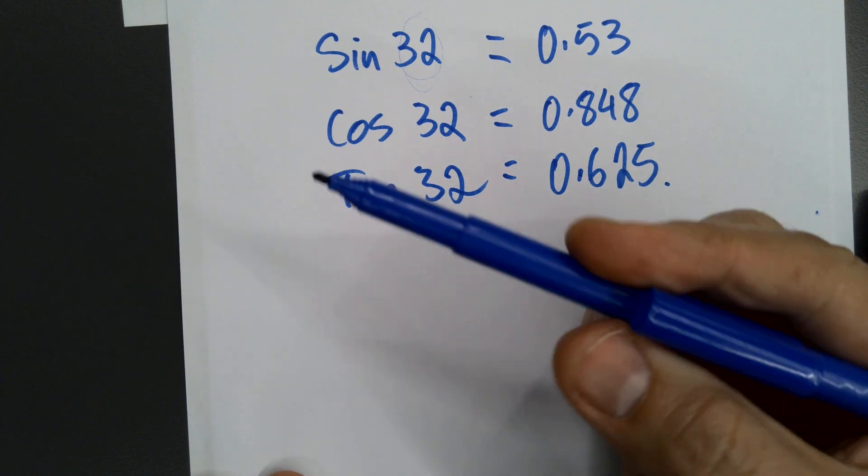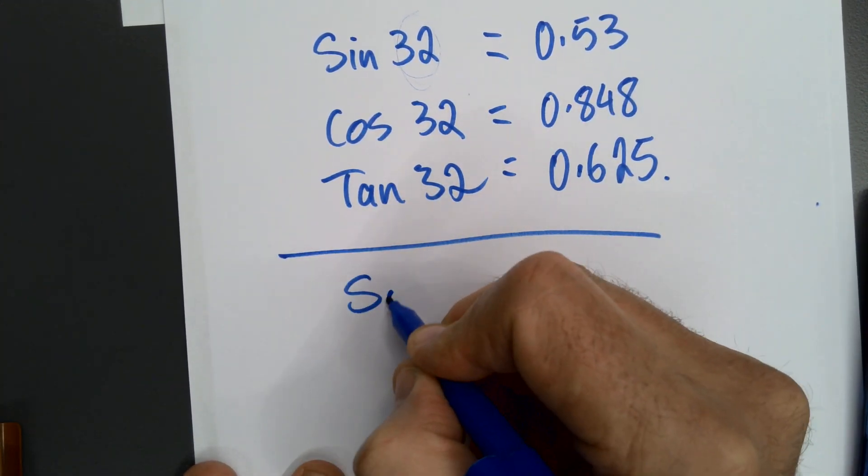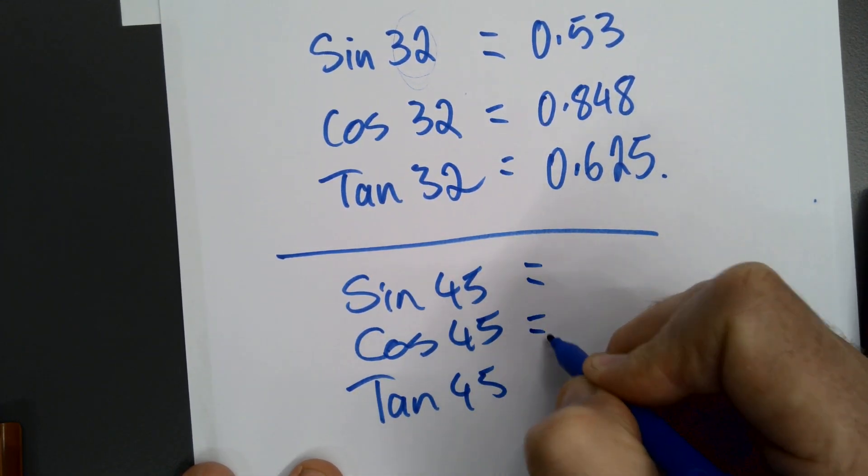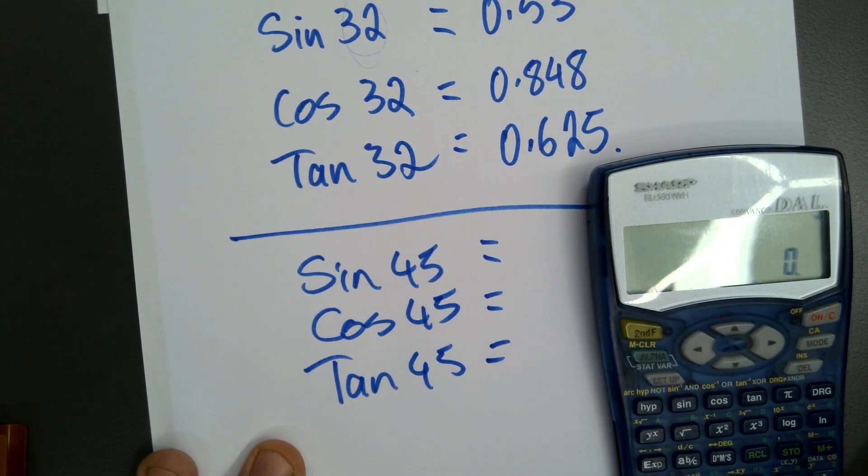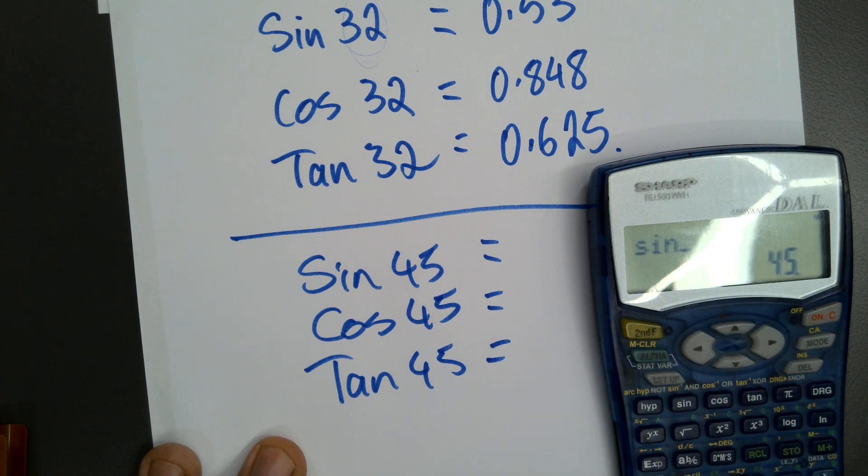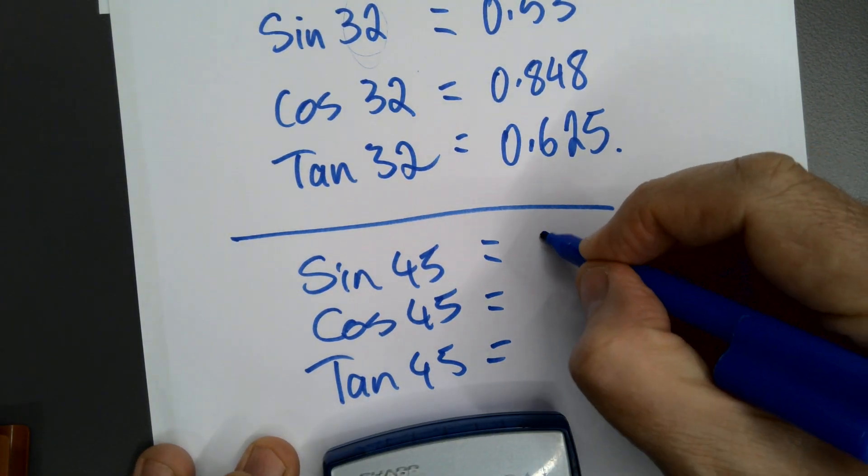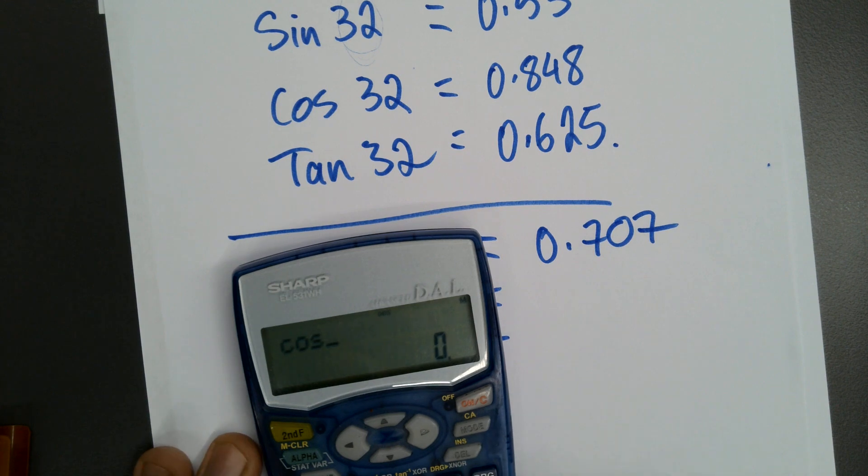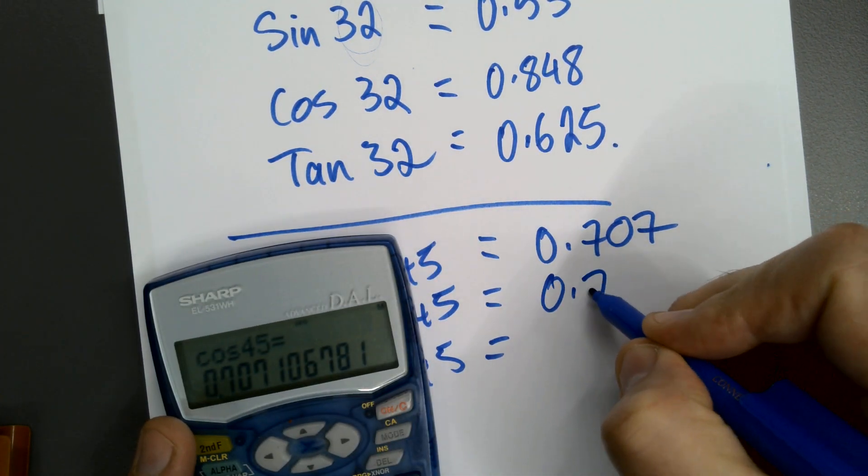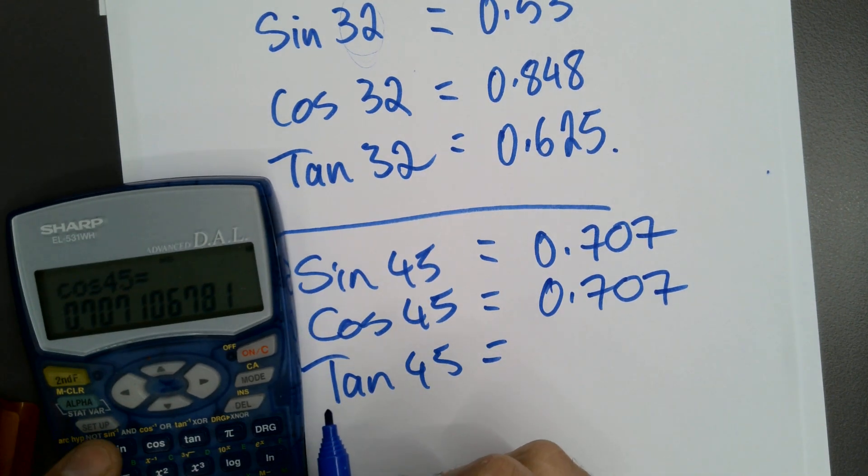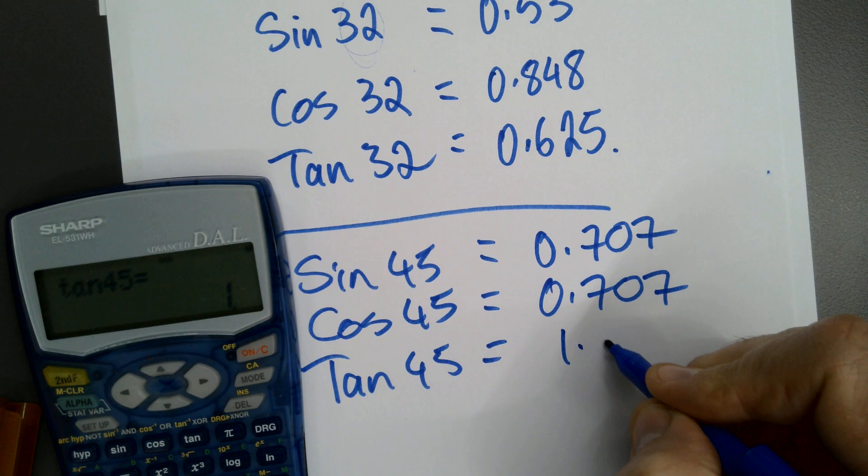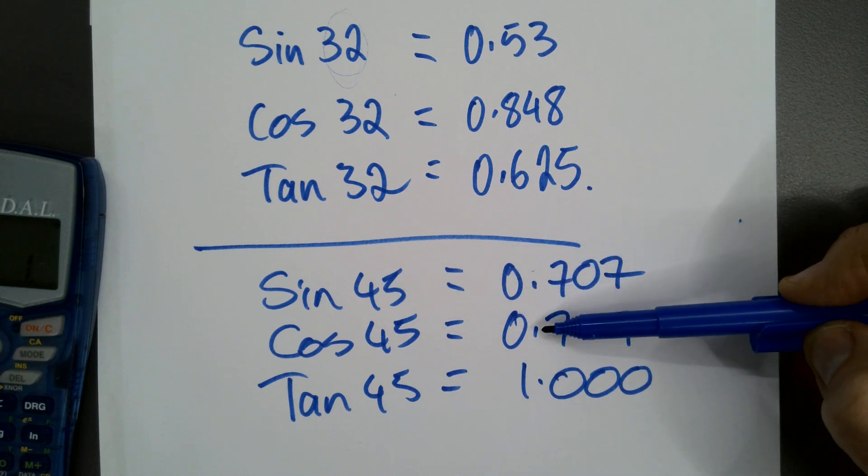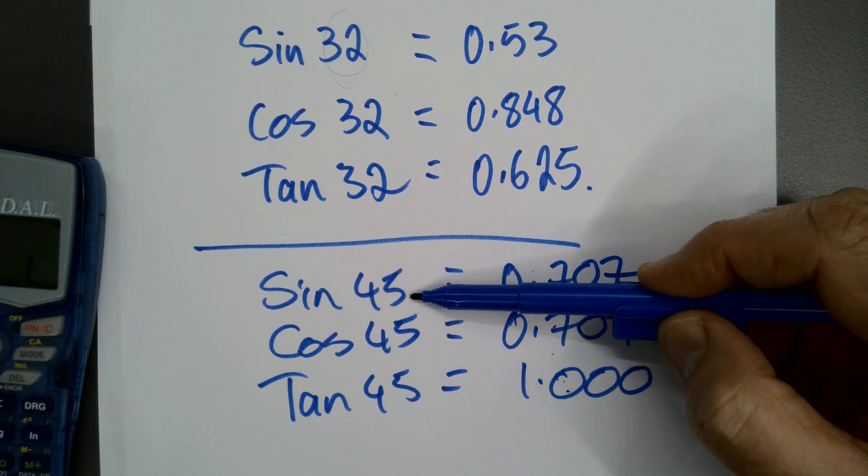What if I had 45 degrees? So sine 45, cos 45, tan 45. Now this is an interesting one because they'll end up funny looking numbers. Sine 45 is 0.707. Cos 45 is the same number. And tan 45 is exactly 1. So they are the magic numbers that link the two sides - each one links two sides when the angle is 45 degrees. So if you had two meters and two meters that way, that's a 45 degree triangle. That's how that works.